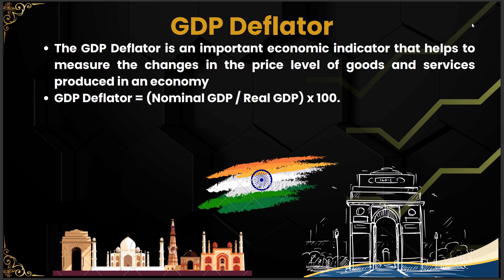GDP deflator is a very important economic indicator that measures changes in the price level of goods and services produced in an economy. It provides a way to adjust nominal GDP — obtained at current market prices — to arrive at real GDP, which is at constant prices. This adjustment is crucial because it eliminates the effect of price changes on the output of an economy. The formula is: GDP Deflator = (Nominal GDP ÷ Real GDP) × 100.